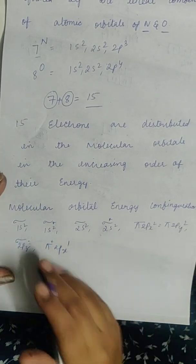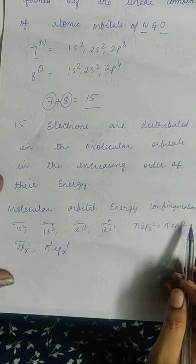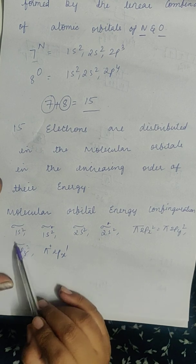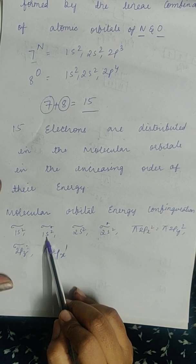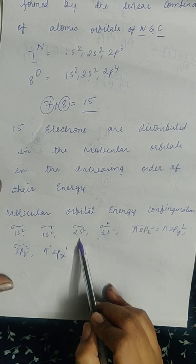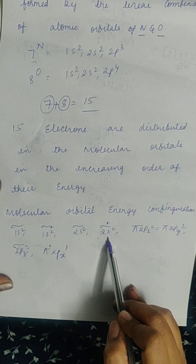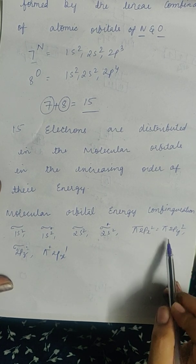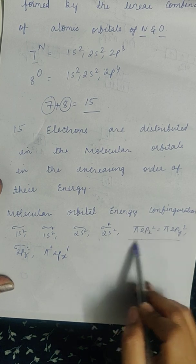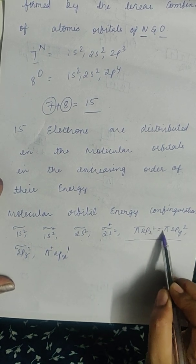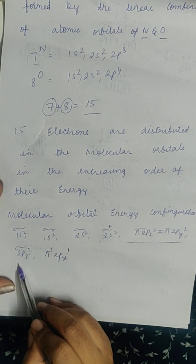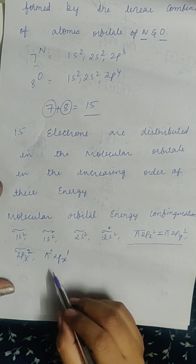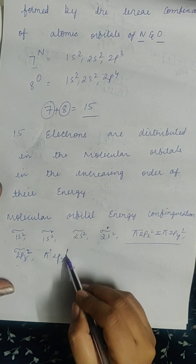The molecular orbital energy configuration of nitric oxide is as follows: sigma 1s2, then the higher orbital sigma star 1s2, sigma 2s2, followed by sigma star 2s2, then pi 2px2 equals pi 2py2 — since both have the same energy level I am representing it with an equal sign. Then sigma 2pz2, and then pi star 2px1.